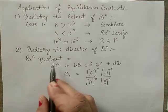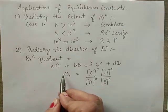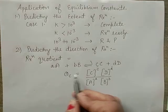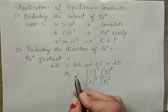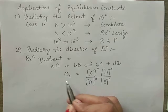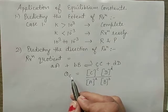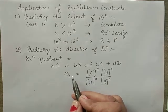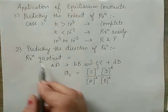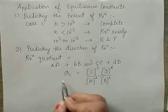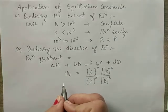The reaction quotient depends on whether the concentration is taken in terms of moles per liter or partial pressure. With the help of this reaction quotient, we can predict in which direction our reaction will proceed.